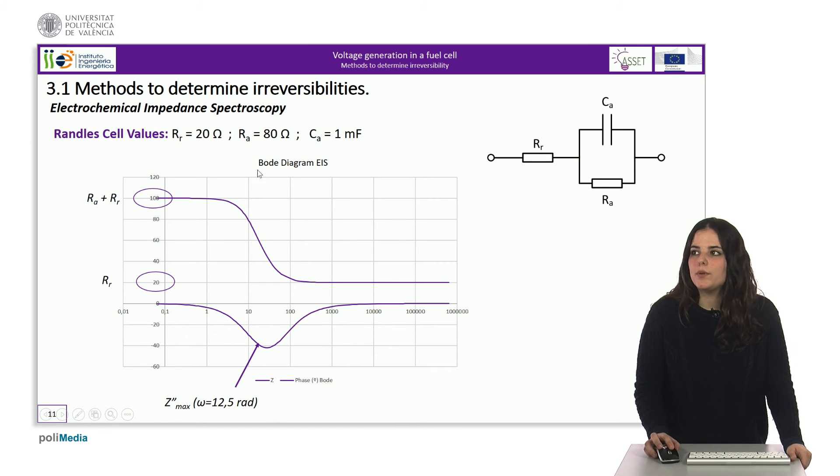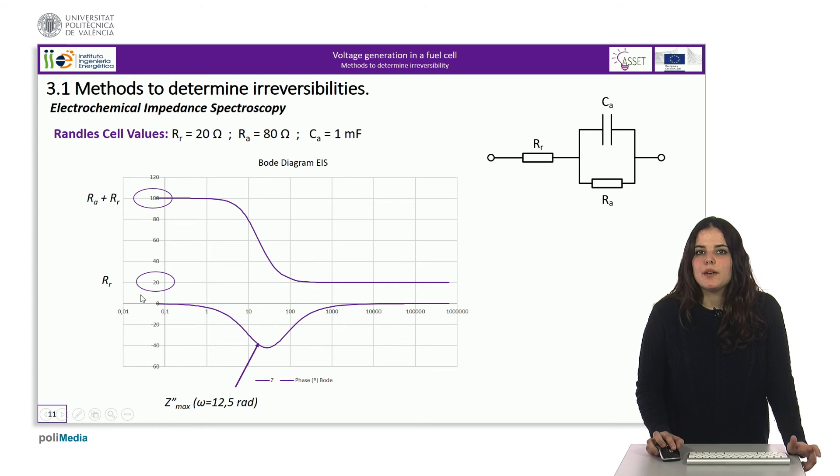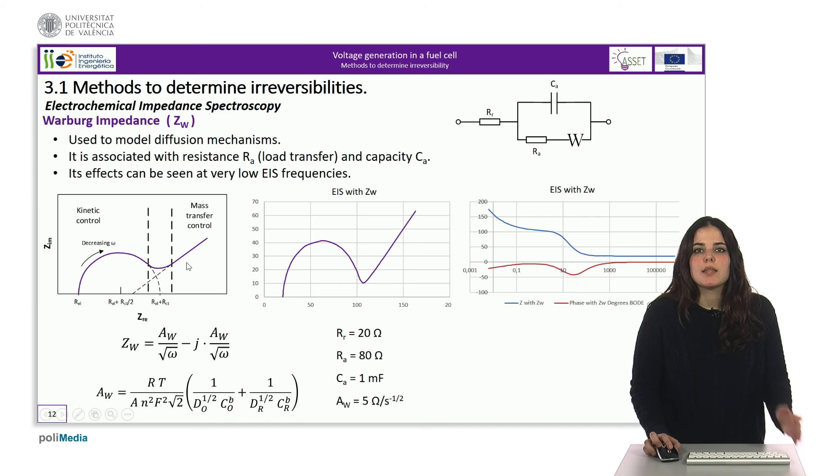However, in this case, the Bode diagram does not provide additional information. We can see this time the R R resistance at high frequencies and the sum of the two resistors at low frequencies, but the maximum impedance pulsation remains in a poorly identifiable place. Therefore, when is the Bode diagram useful? The Bode diagram is used to calculate the value of the so-called Warburg impedance.